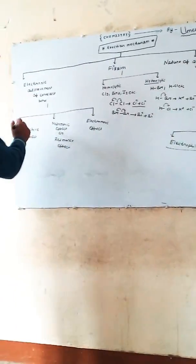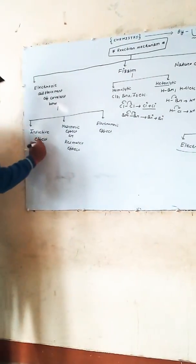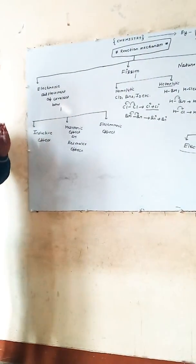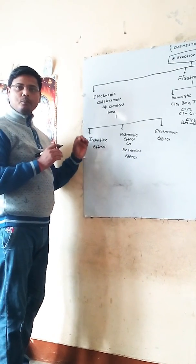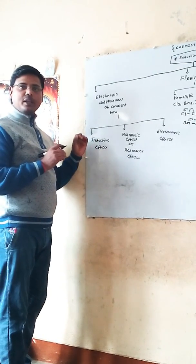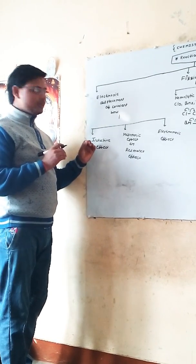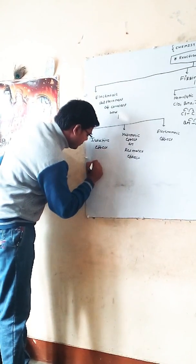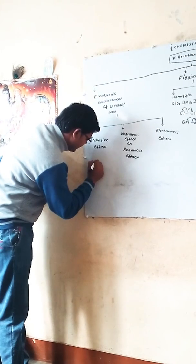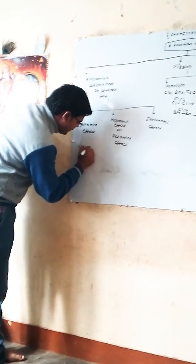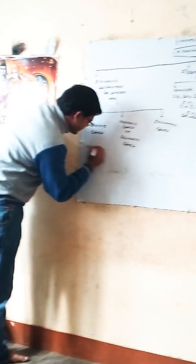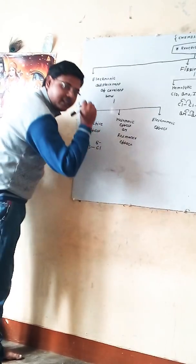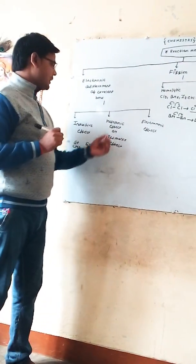Displacement of sigma bond due to the presence of a more electronegative atom is known as inductive effect. For example, in CH3, there is a partial positive charge and partial negative charge.